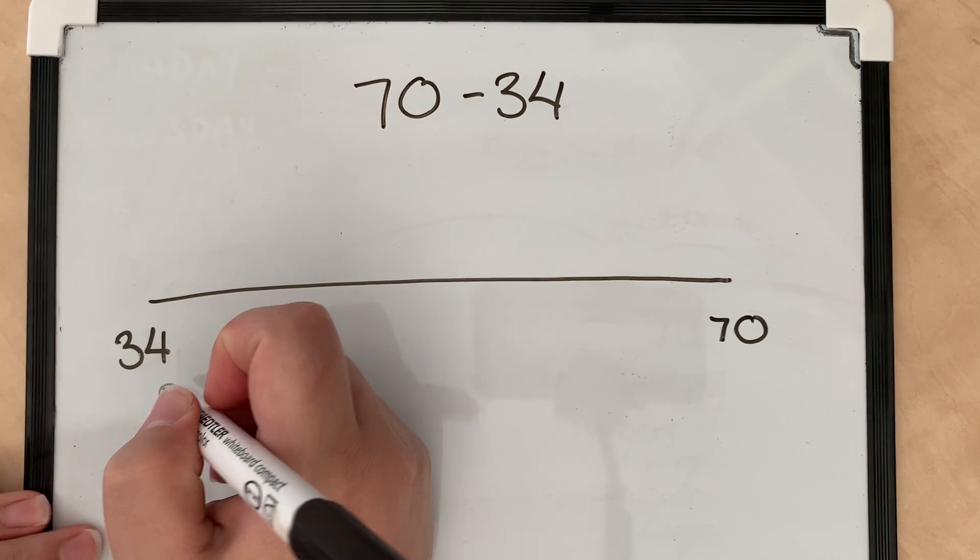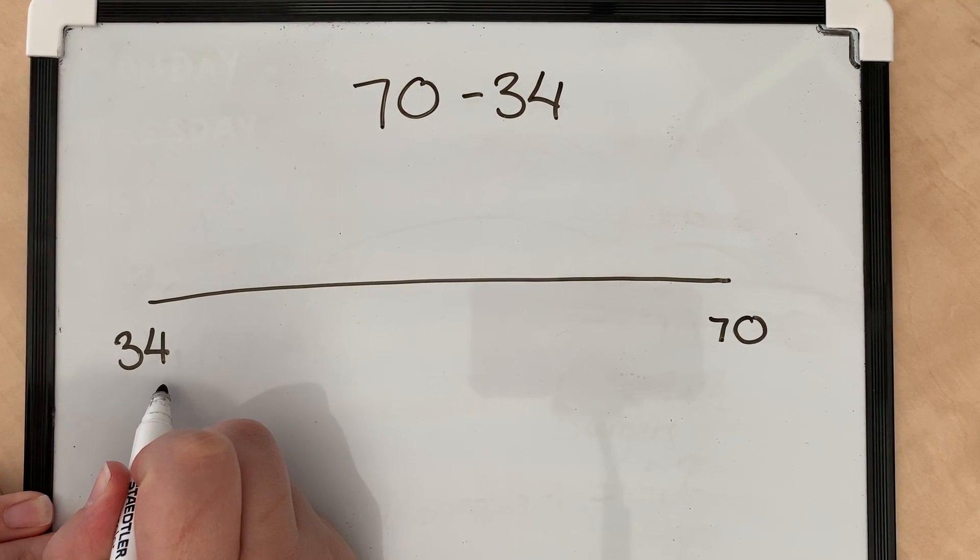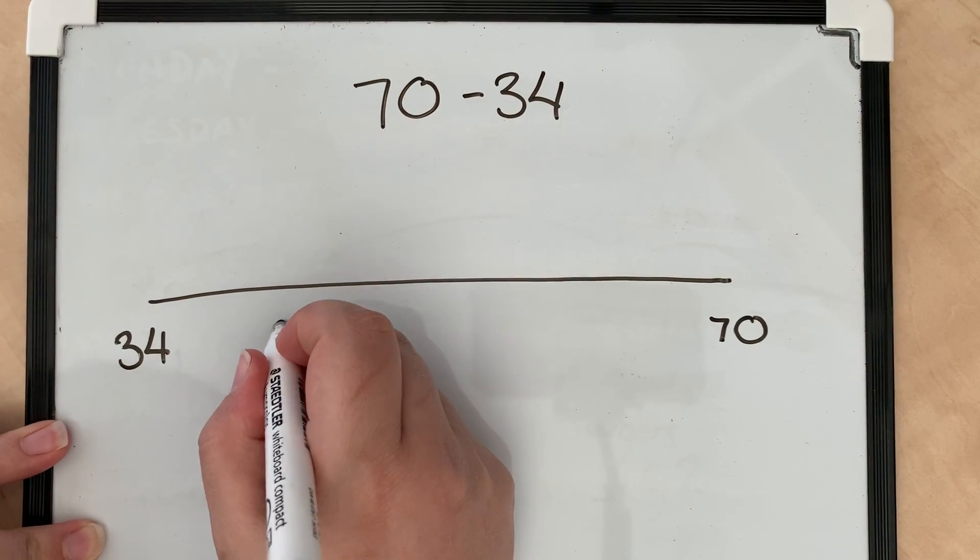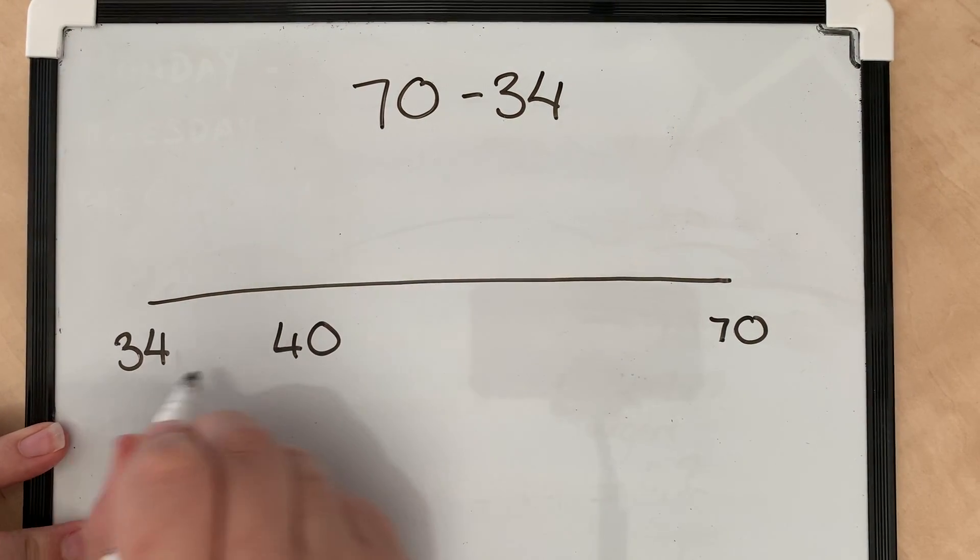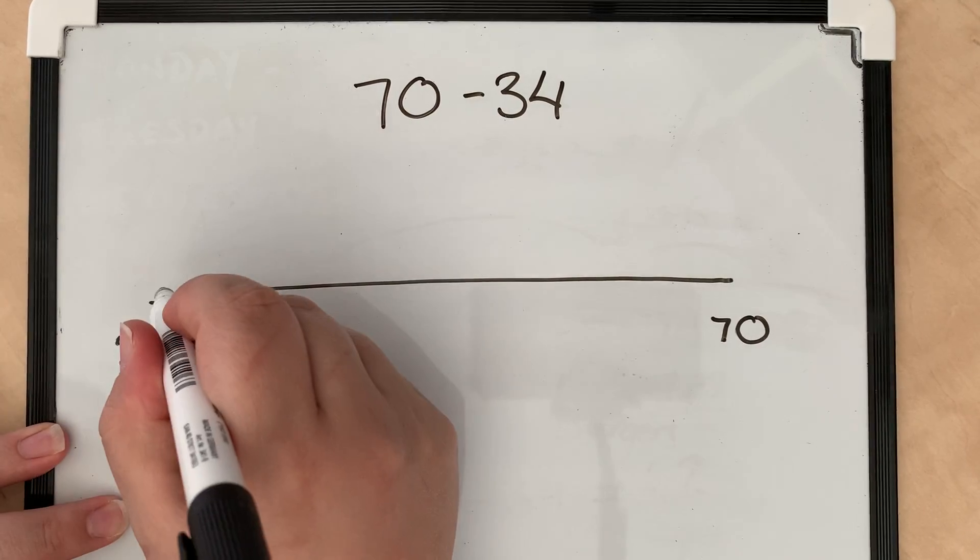Now what I need to find first of all is the next multiple of 10 after 34, which in this case would be 40. So I'm just going to write it a little further along my line.